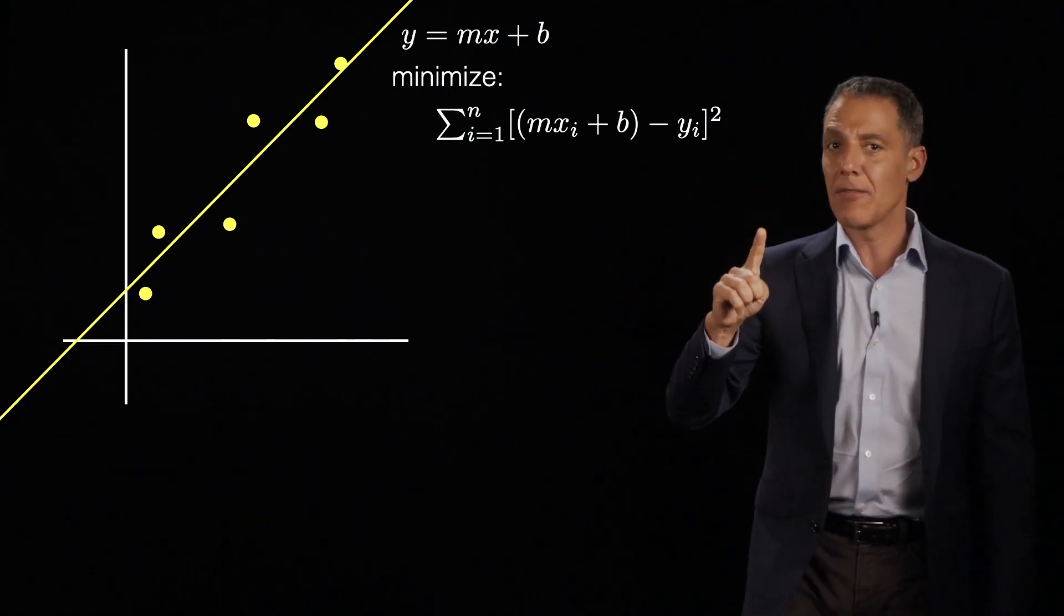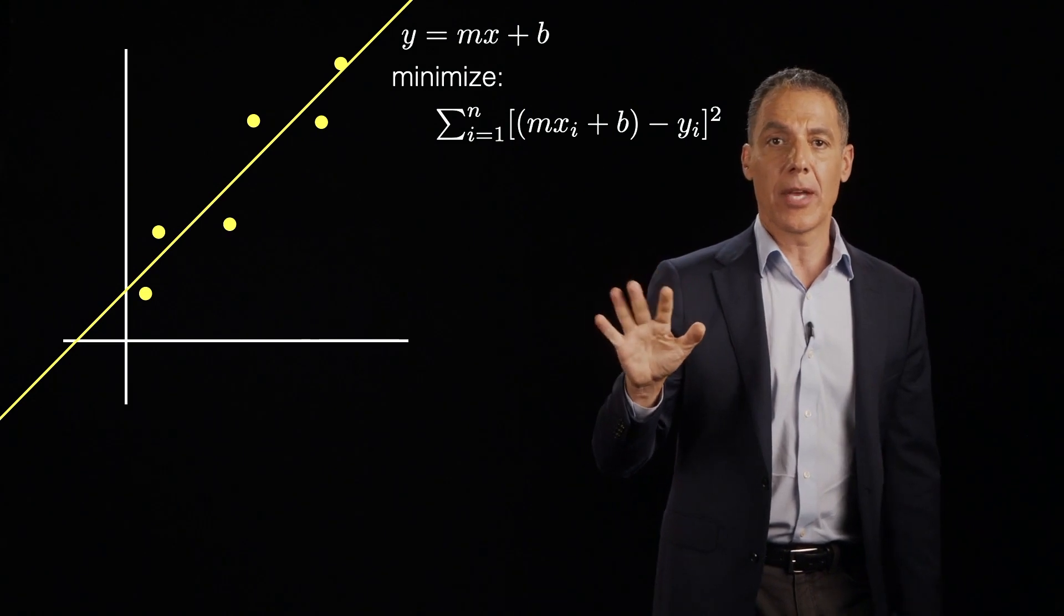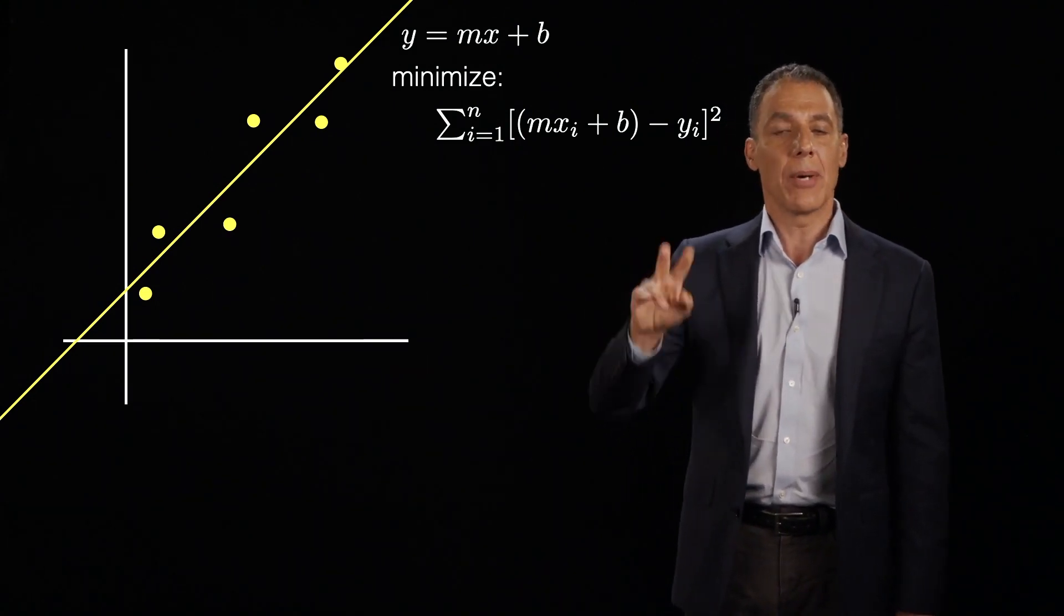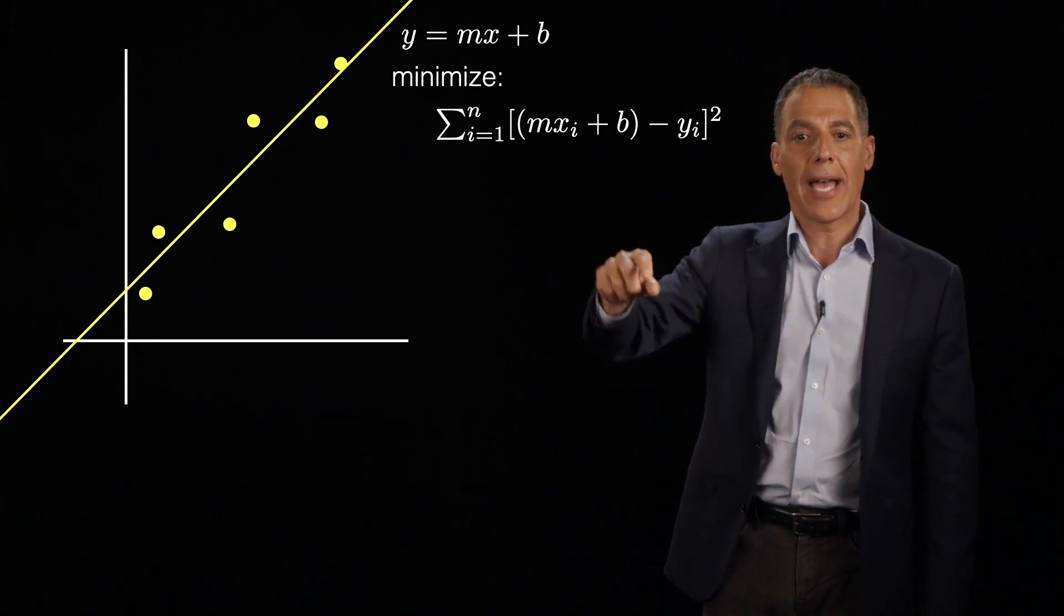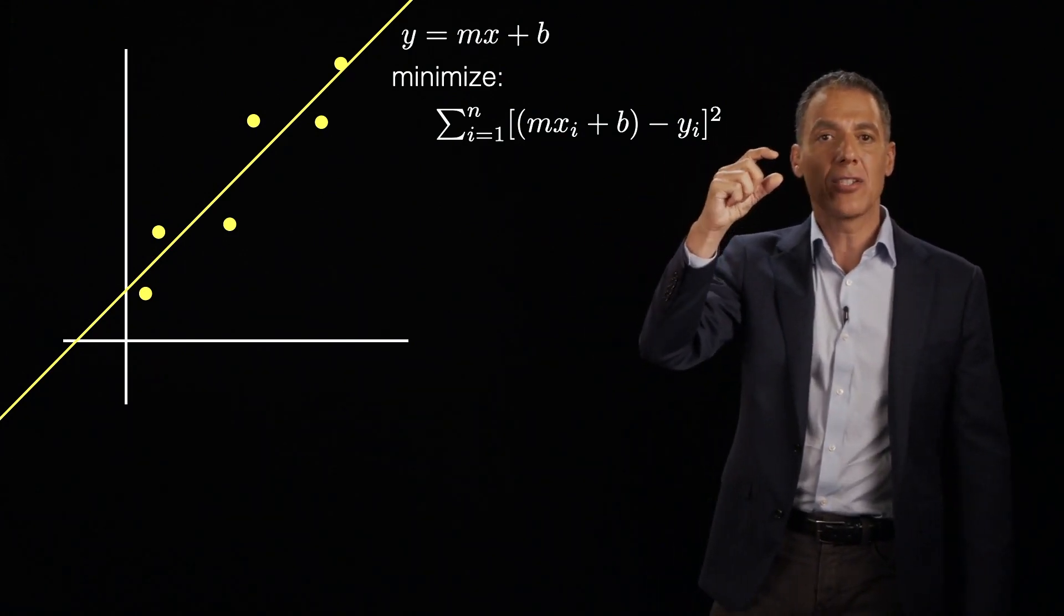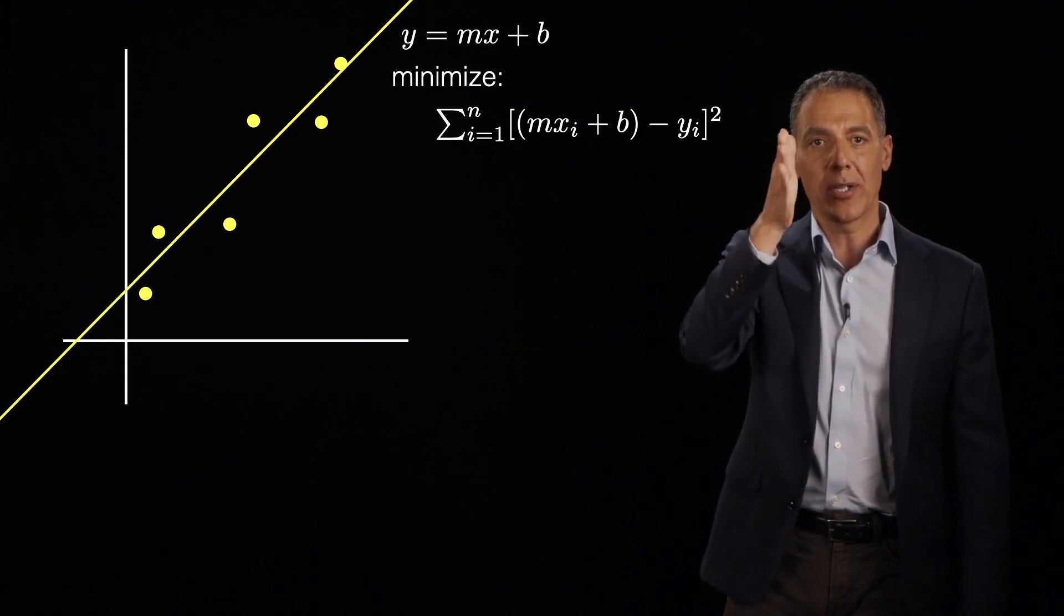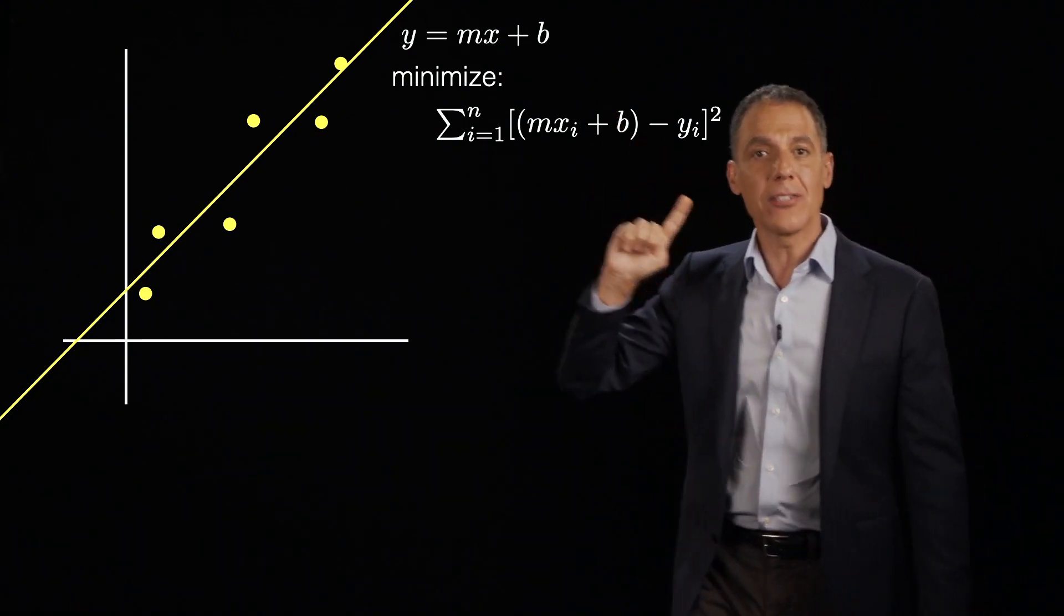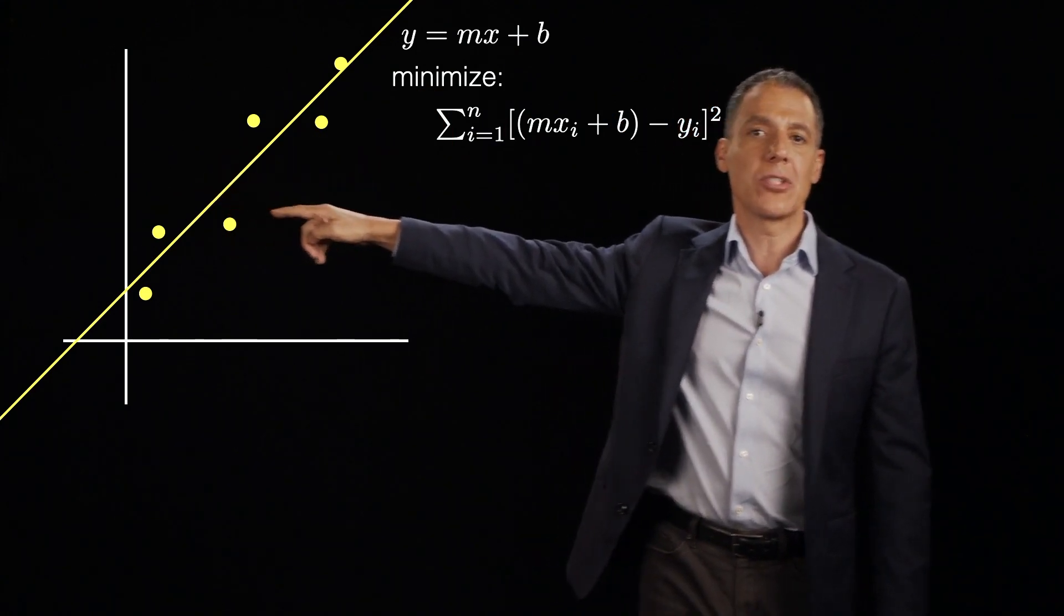And I want to emphasize again that I've made choices here. And they were intentional choices. They may not be obvious choices. But here are the two choices I made. I chose to minimize the vertical distance between each point in the line. And I chose to square that error because I'm telling you that that's going to lead to a simpler optimization.